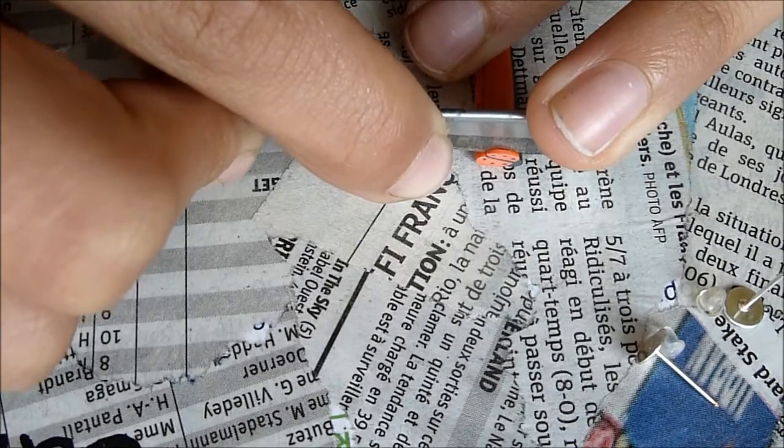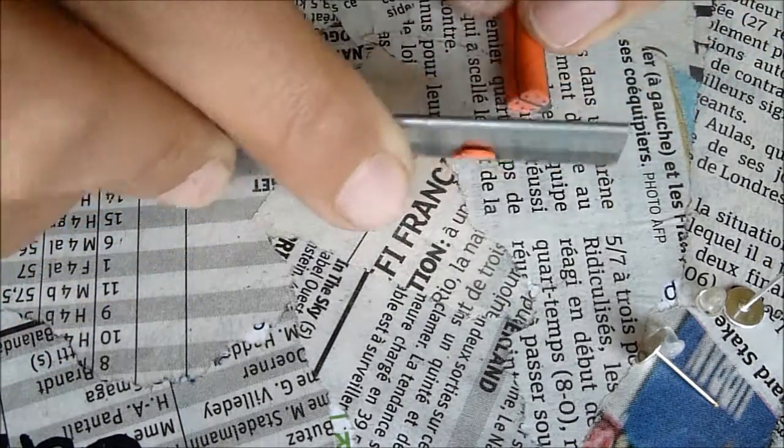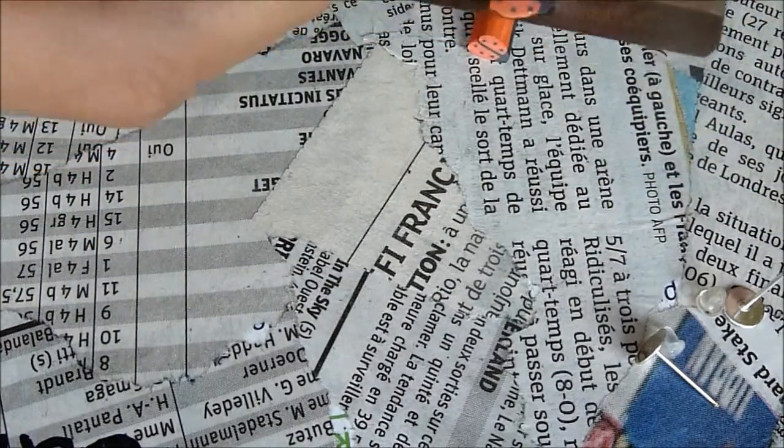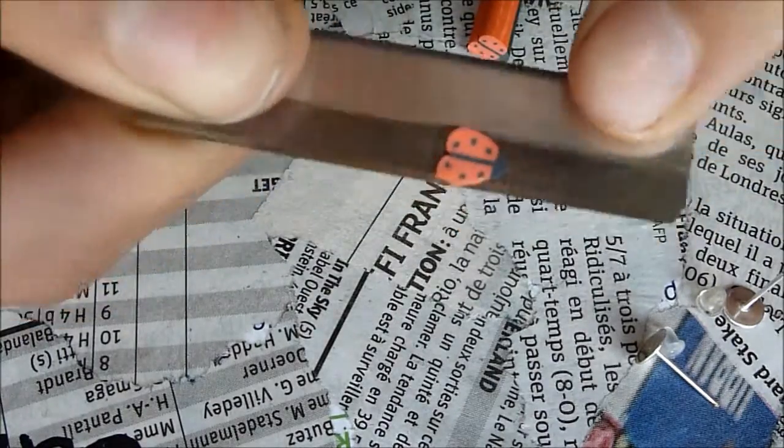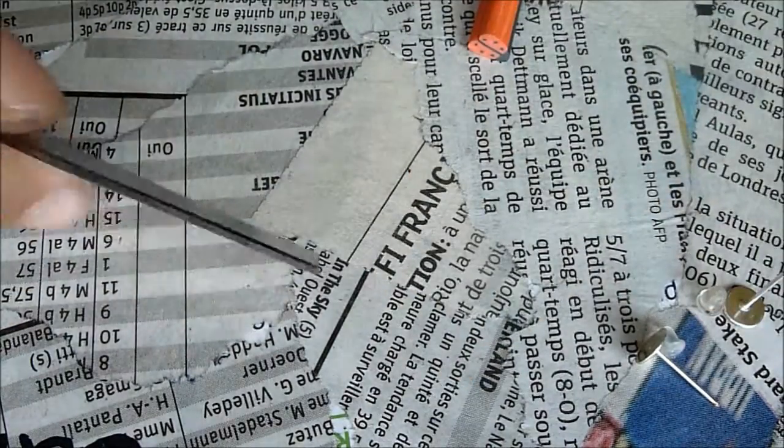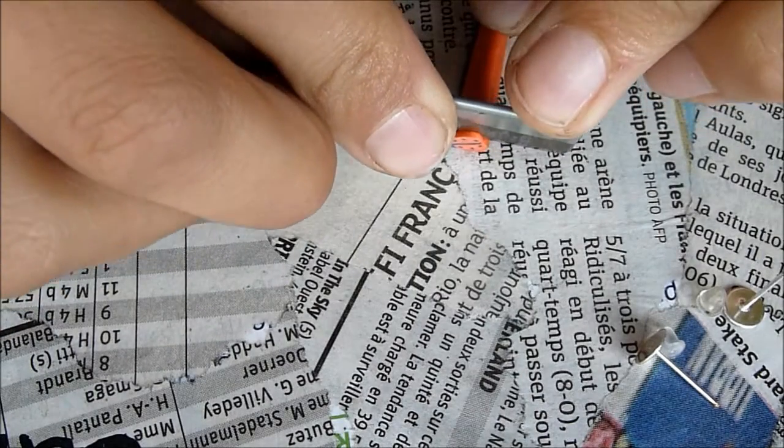En fait, il faut couper bien à la verticale, pas sur le côté. Et vous voyez, là, c'est pas bon parce que la tranche est un peu fissurée. Et ici, elle est beaucoup trop fine par rapport à là. Donc, je ne les jette pas, je les garde pour une autre utilisation. Et vous pouvez recommencer comme ça.